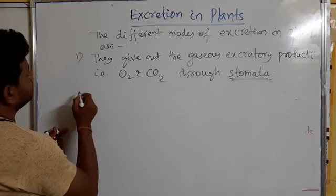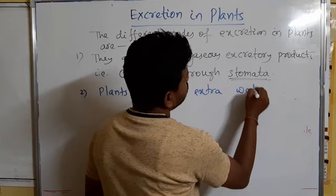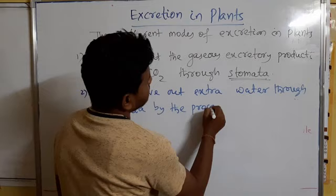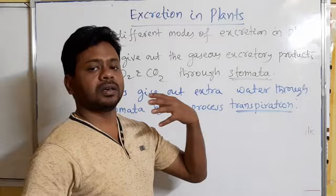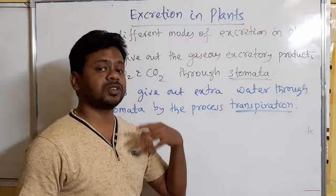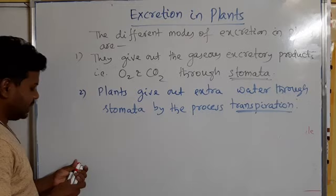The second way plants excrete is: plants give out extra water through the stomata by the process called transpiration, which we have already read in transportation in plants. Transpiration is a process in which extra water goes out in the form of water vapor through the stomata. So transpiration is also a part of the process of excretion — the plants give out the extra water in the form of vapor through the stomata.